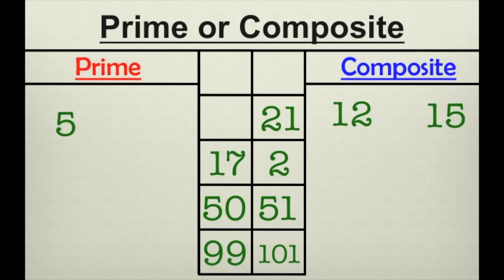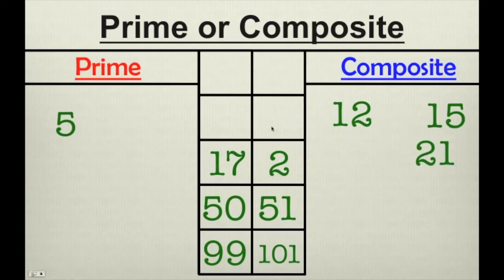How about 21? 21 is also composite. 21 is composite because it has factors of 1, 3, 7, and 21.